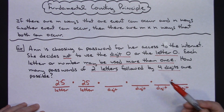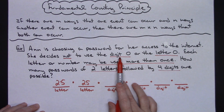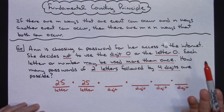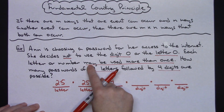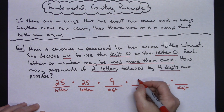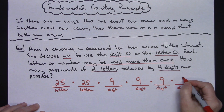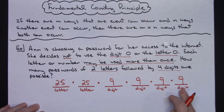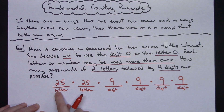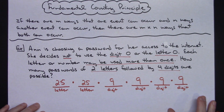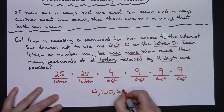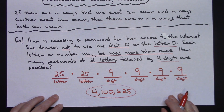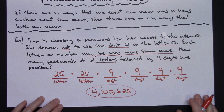For the digits, there are 10 digits — zero through nine — but she is not going to use the digit zero. So there are only 9 possibilities she can choose from for the first digit. Since digits may be used more than once, she still has 9 digits to choose from for each of the remaining three digit slots. So you multiply 25 times 25 times 9 times 9 times 9 times 9, and that turns out to be 4,100,625 — that's how many different possible passwords she could generate.